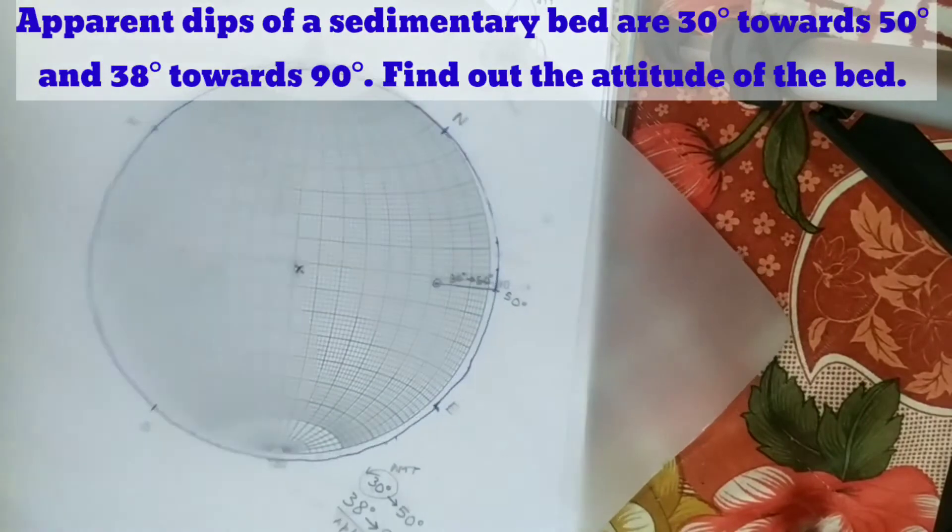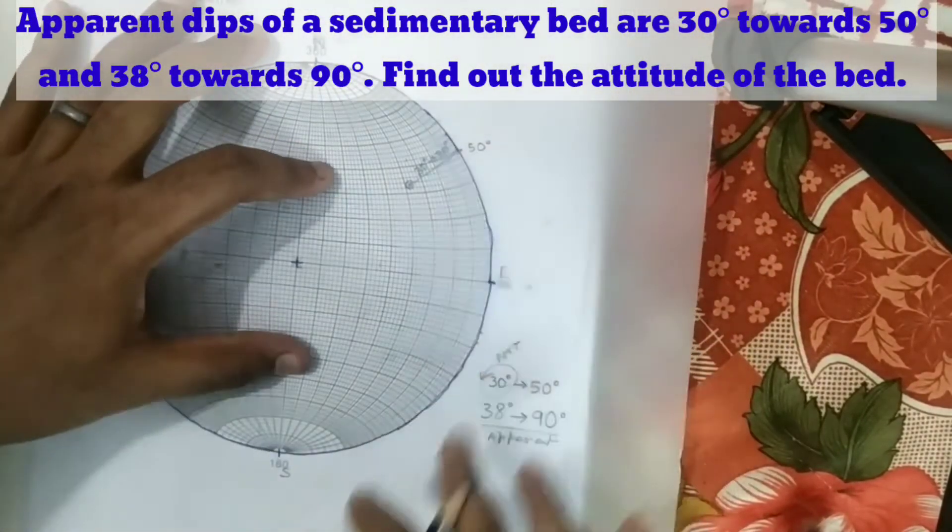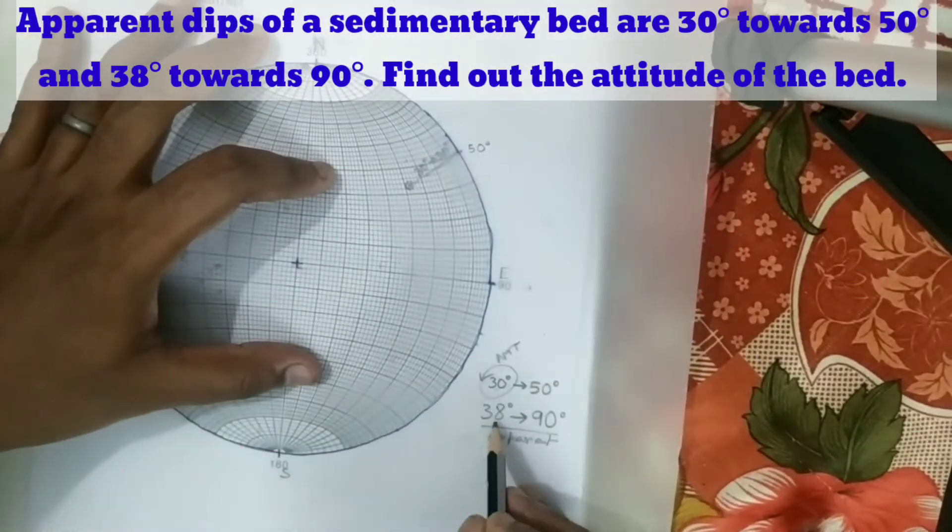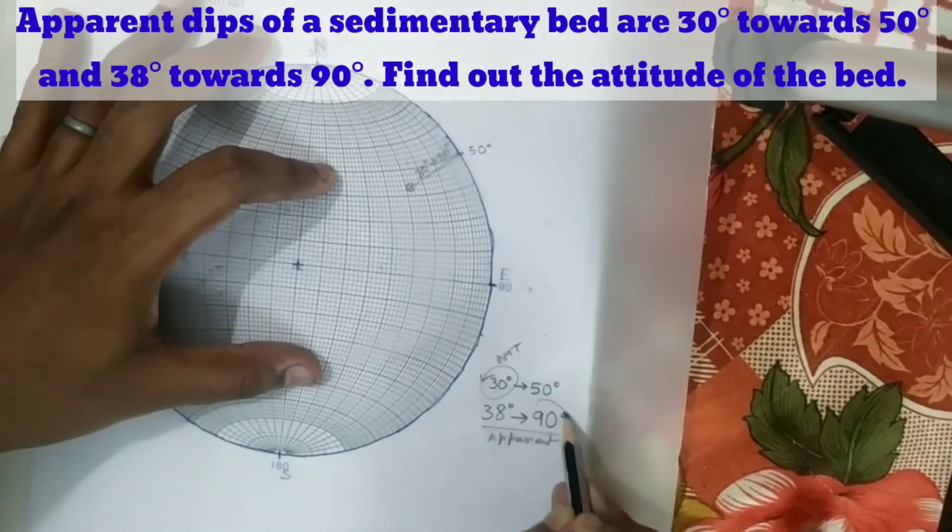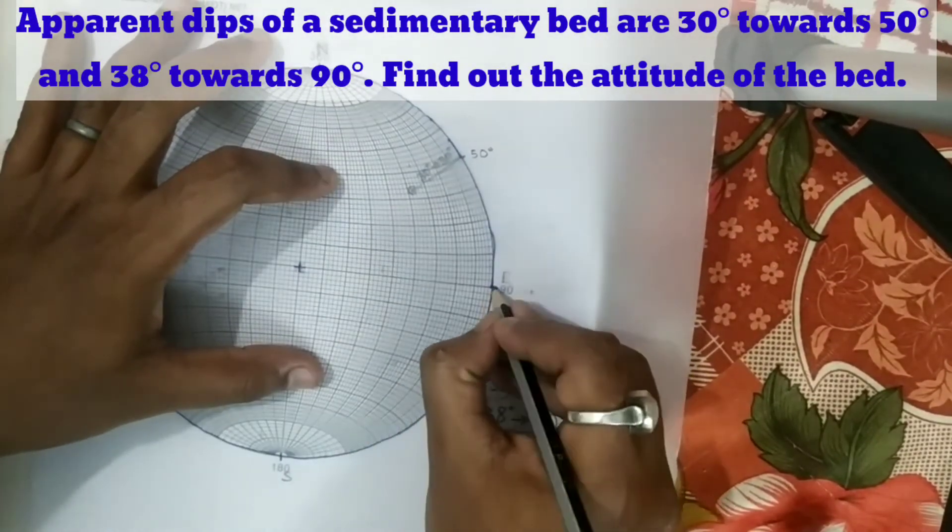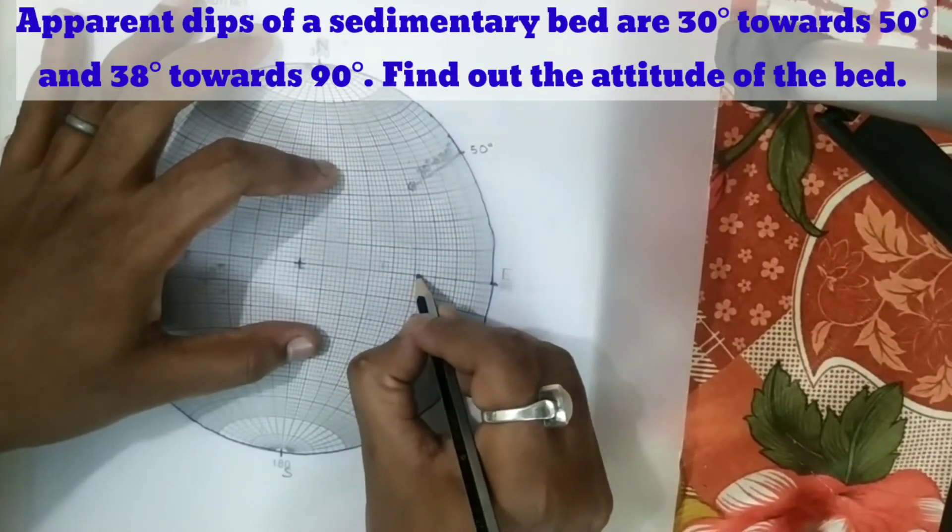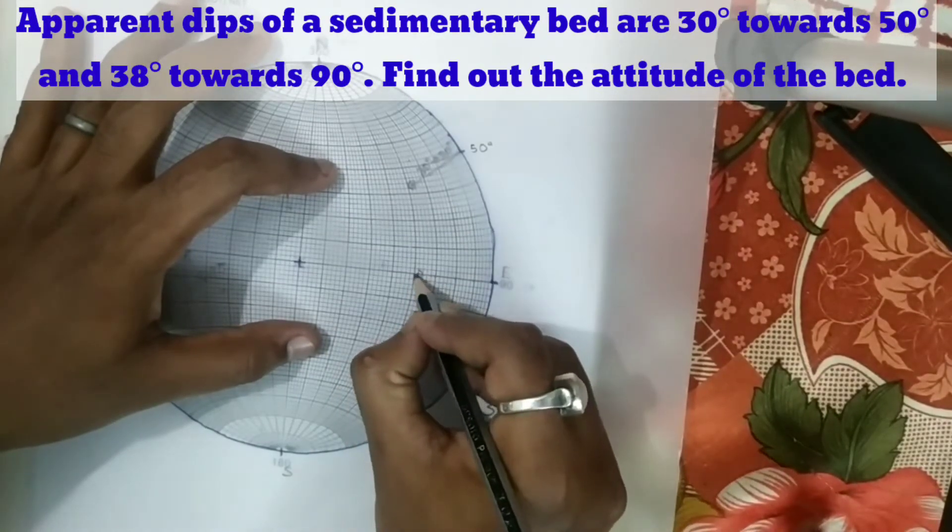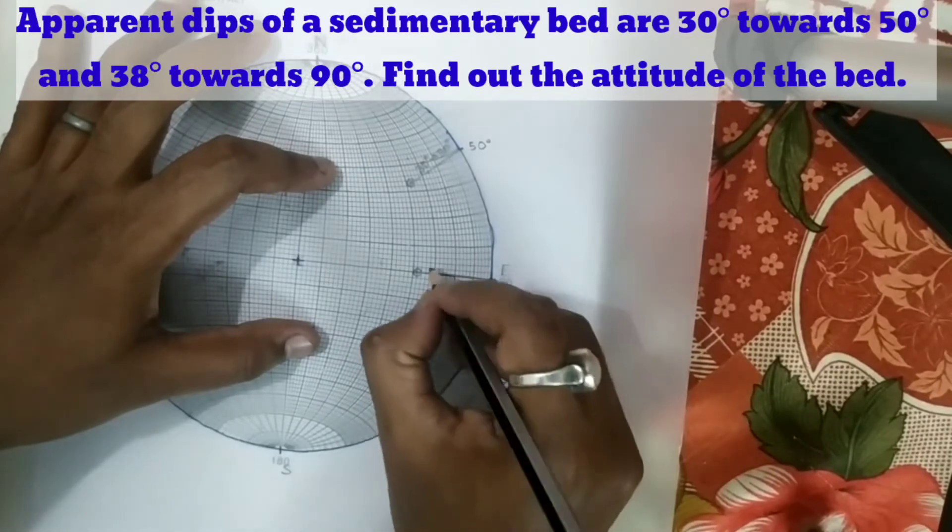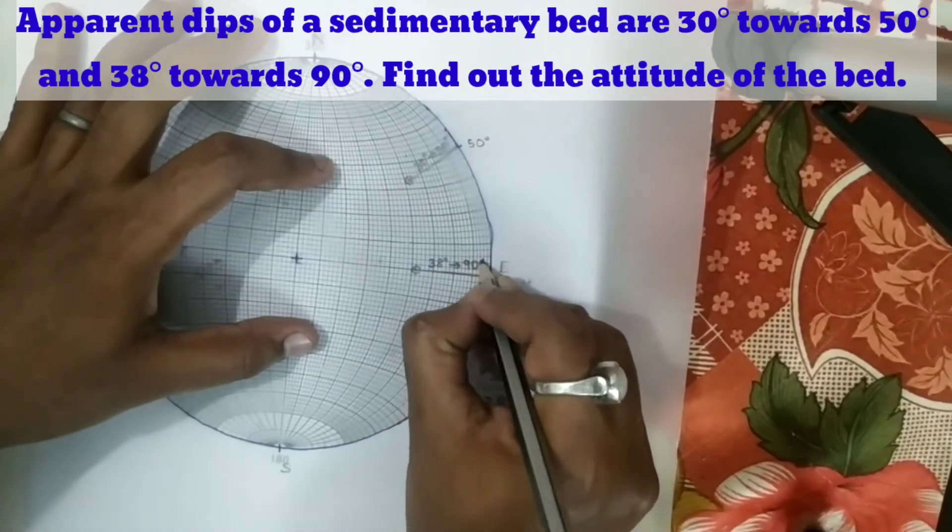And again, another data is 38 towards 90. Here 90 is the direction. So this is 90 and this is 38. So 0, 10, 20, 30 - here it is 40. So this one will be 38. Write 38 towards 90.